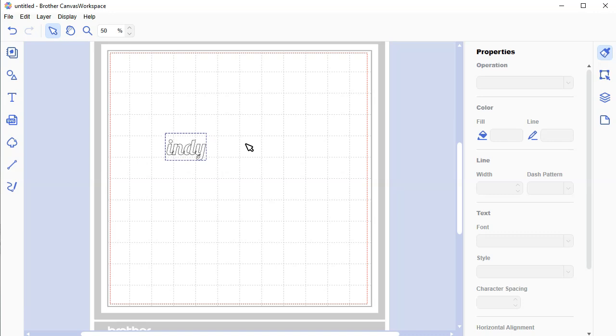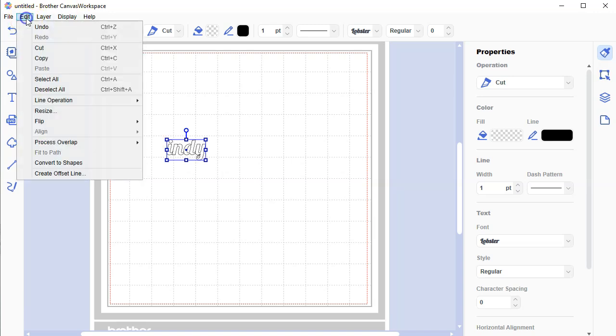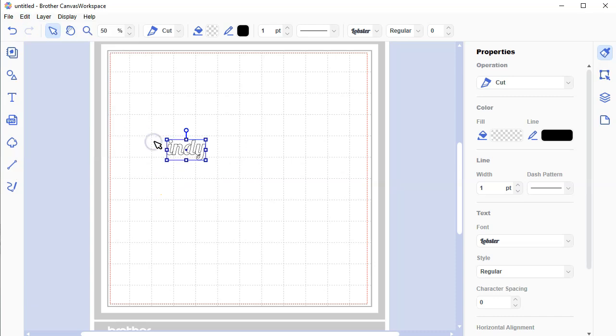Now what I want to do is select this text with my mouse. And you see how there are little squares around it. It means it is selected, this block of text. And I am going to go up to edit, process overlap, and weld. Now what that did is instead of having little lines between the letters, it fused them all into one.